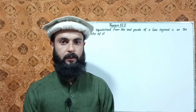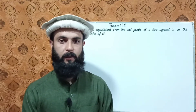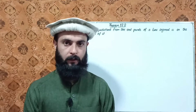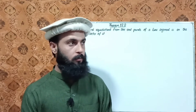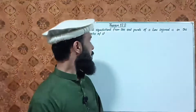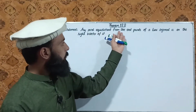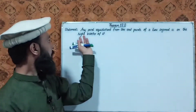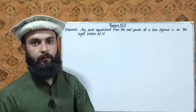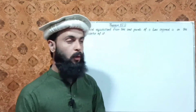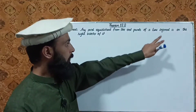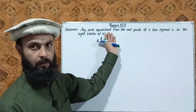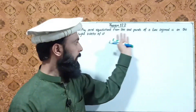Class 9 mathematics, chapter number 12, theorem number 12.2. The theorem statement: any point equidistant from the endpoints of a line segment lies on the perpendicular bisector of it. Now let's come to the line segment and its endpoints.